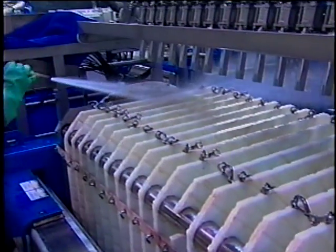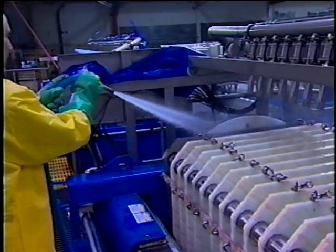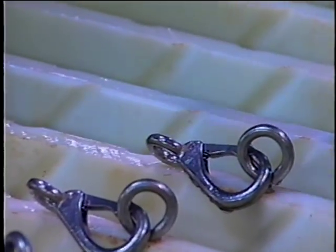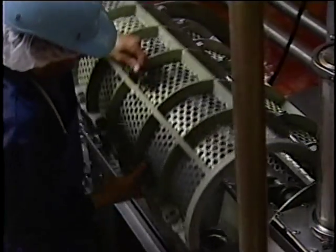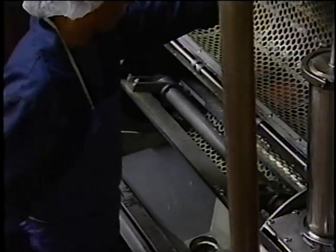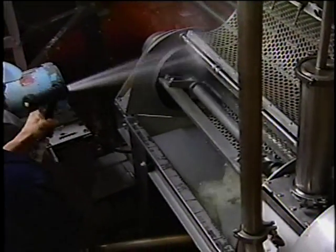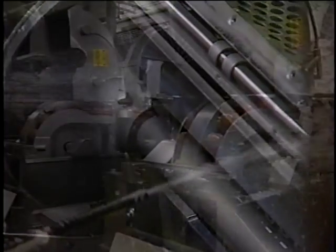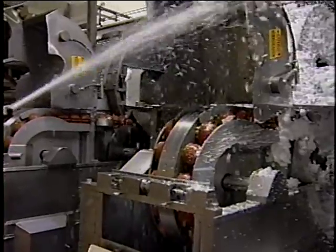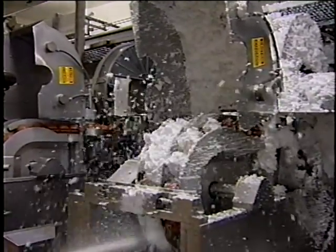In order to properly conduct cleaning and sanitizing and to maximize the effectiveness of these activities, there is an order in which those activities should be conducted. First, any equipment that needs to be disassembled prior to cleaning should be taken apart by a trained individual. All surfaces should be pre-rinsed with potable water. Next, all surfaces and equipment should be effectively cleaned using hot water, detergent, high pressure, or scrubbing as necessary.